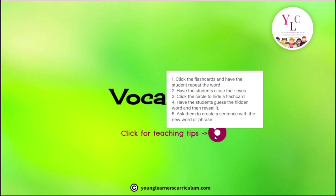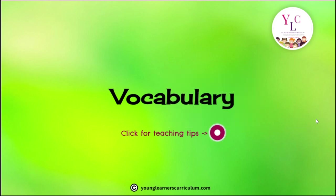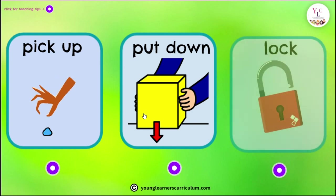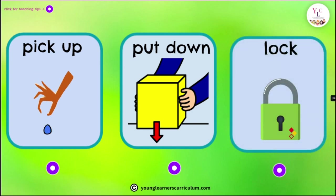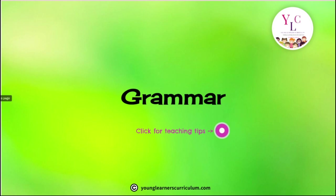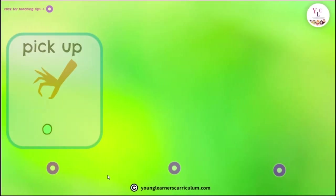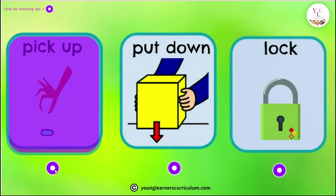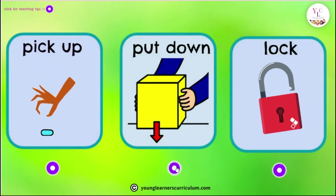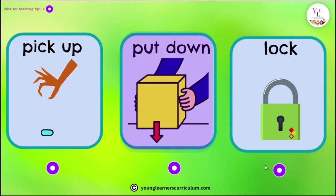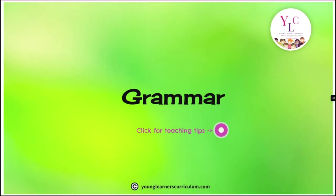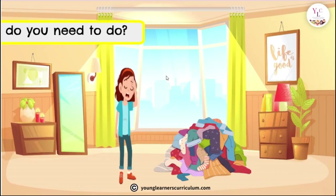Then we have the vocabulary section. These tips explain how to do the vocabulary, what to do with it, and how to get them speaking in full sentences. You can click on the vocabulary cards to make them disappear and click again to make them reappear.